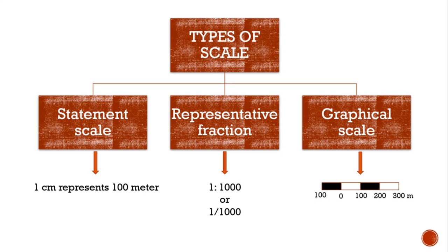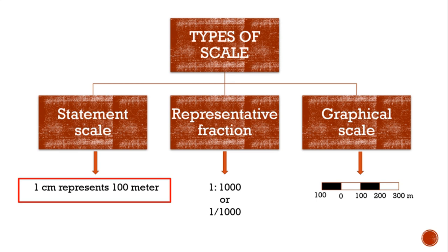The first method is statement scale. The scale indicator in the form of a written statement is known as a statement scale. For example: '1 centimeter represents 100 meters.' It is in the form of a written statement and is the simplest of the three methods.